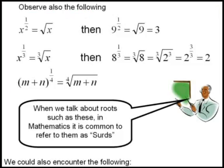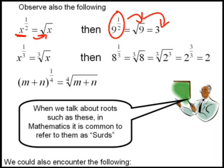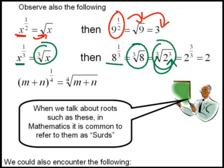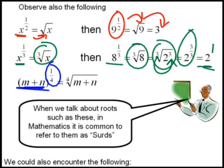X to the power of a half is simply the square root of x. So 9 to the power of a half becomes the square root of 9, which is just 3. An exponent of a third becomes the cube root of x. So 8 to the power of a third becomes the cube root of 8, which is the cube root of 2 to the power of 3. Taking that 3 from outside and bringing it in as a denominator gives us 2 to the power of 3 over 3, which is 2 to the power of 1, or simply 2. Even a bracket to the power of a quarter gives you a fourth root of whatever was inside the bracket.